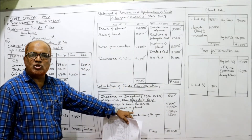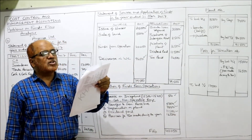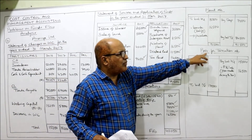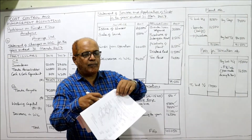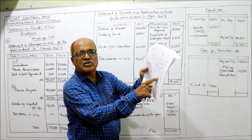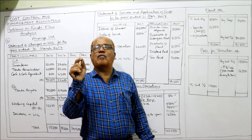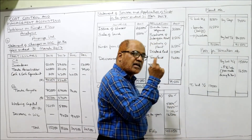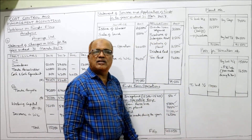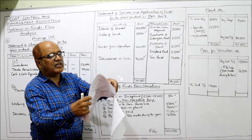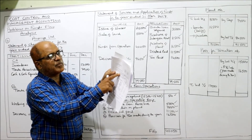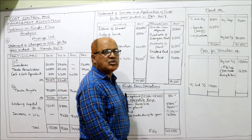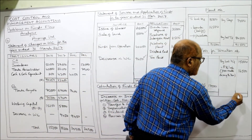Dividend paid is added as a non-cash non-operating item and also shown on the application side. For provision for taxation, this is a new point — first time we prepare the provision for taxation account. Last year provision for taxation in the balance sheet is 15,000; current year balance is 17,500. Since provision for taxation is a liability, it shows a credit balance. So credit side: balance brought down 15,000 last year, balance carried down 17,500 current year. Income tax provision made during the year is 16,500 — taken on the credit side as 'by profit and loss account.' Total credit side: 15,000 plus 16,500 equals 31,500.